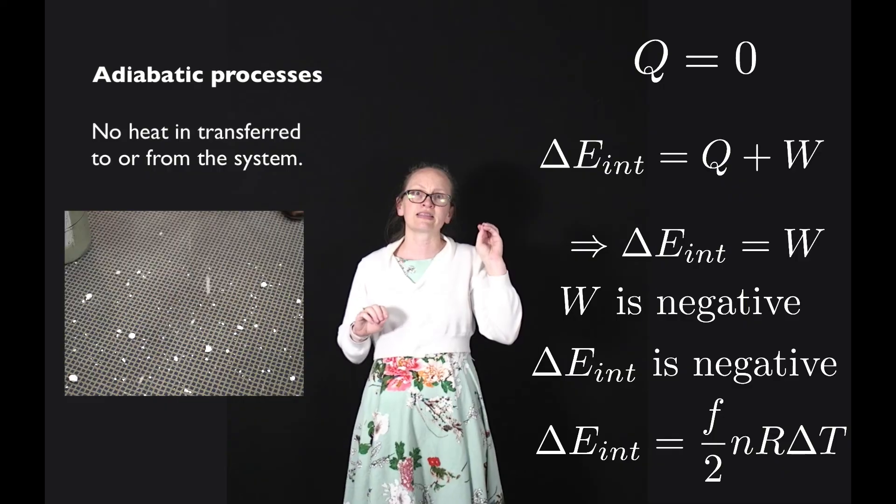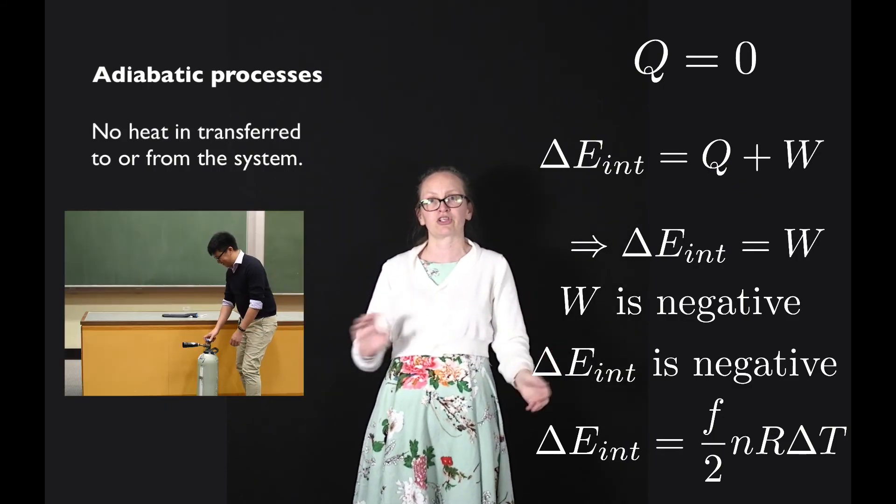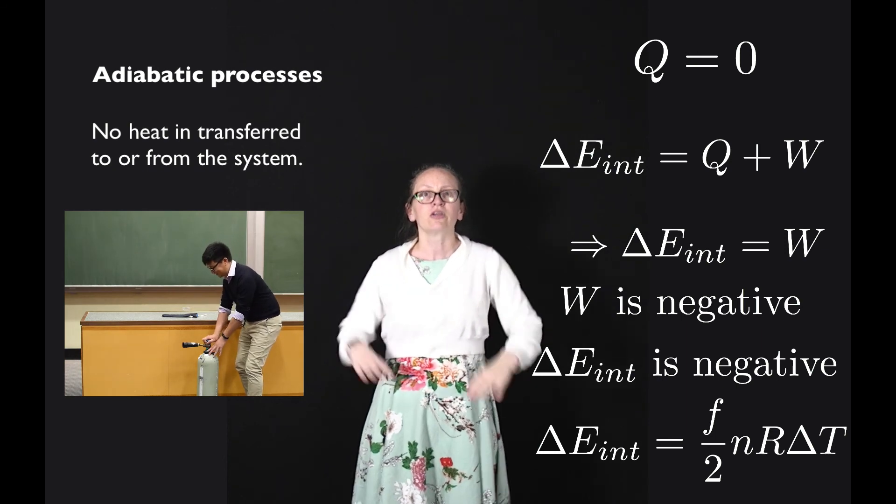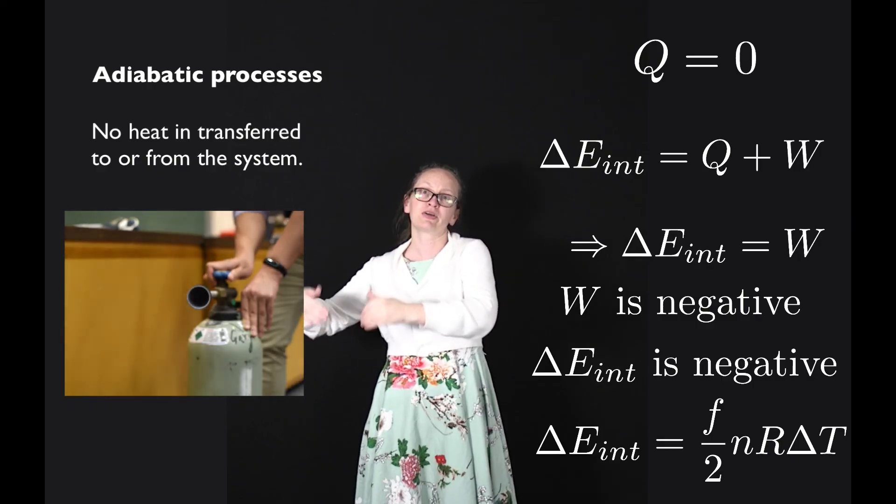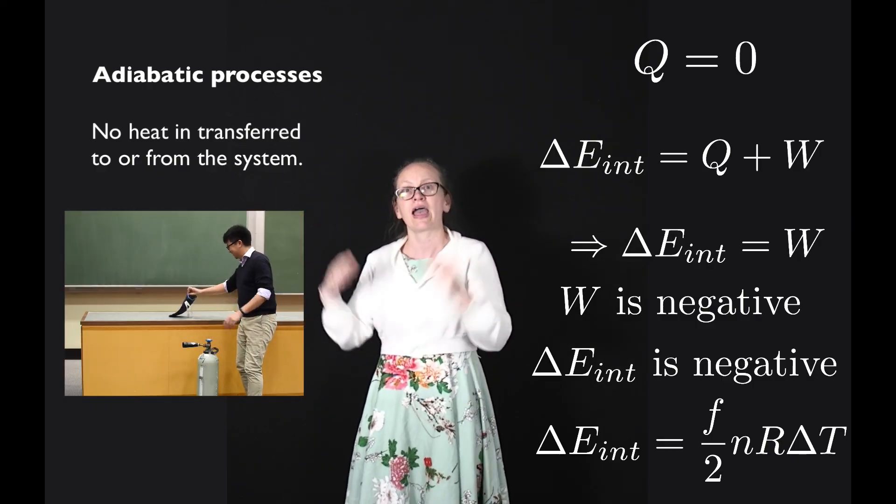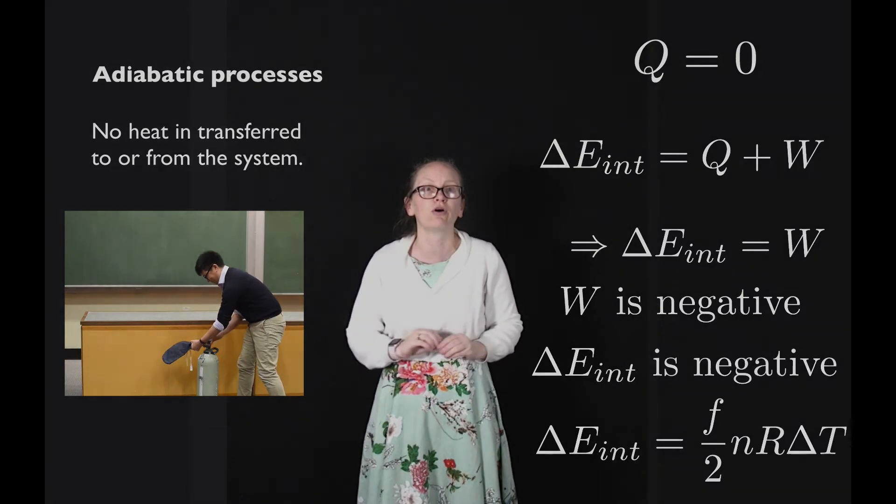So if the change in internal energy was negative, it means that the final temperature must be lower than the initial temperature. We have a negative change in temperature. This is why as the gas rushes out, we get a change in temperature down to a very cold temperature at which carbon dioxide in its solid form, dry ice, can form.